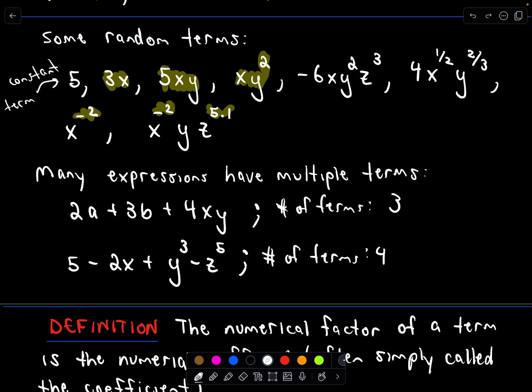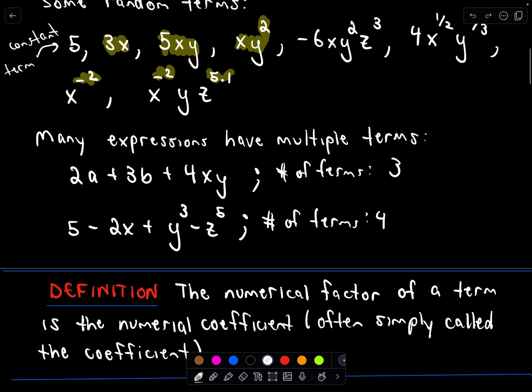Just a little naming convention: typically you'll write things in alphabetical order. So notice, for example, I've got x, y, and z — that's just good notation. I encourage you to do that as well. If you've got a term with a bunch of variables, alphabetize them, because that way it's easier visually to pick out like terms.